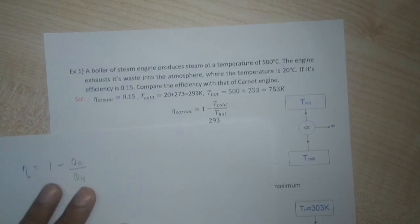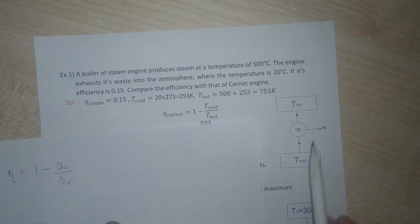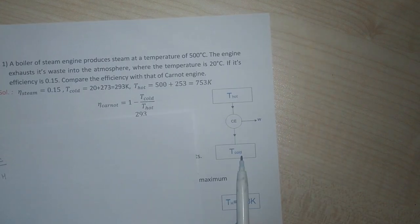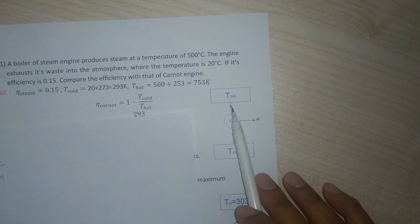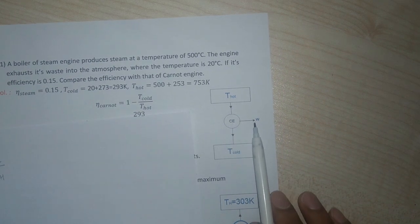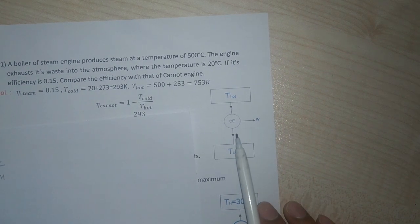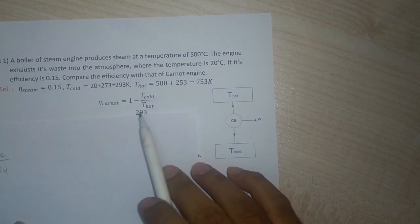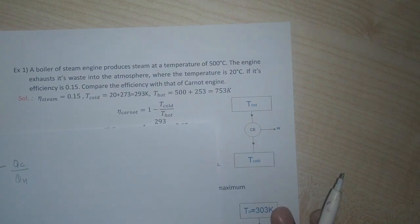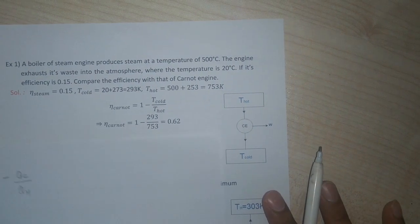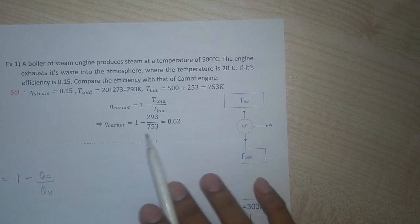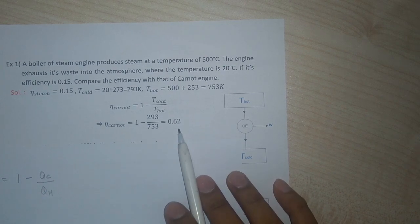If you look at the schematic of a Carnot engine, it looks something like this. We have a hot reservoir and a cold reservoir. We take in some heat from the hot reservoir, we give some amount of work, and some heat is rejected as waste into the cold reservoir. Plugging in the values, we get the efficiency of a Carnot cycle to be 0.62, in other words 62%.